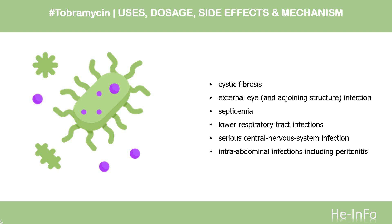Tobramycin injection is indicated in adult and pediatric patients for the treatment of serious bacterial infections, including septicemia caused by P. aeruginosa, Escherichia coli, and Klebsiella spp., as well as lower respiratory tract infections caused by P. aeruginosa, Klebsiella spp., Enterobacter spp., Serratia spp., E. coli, and Staphylococcus aureus.